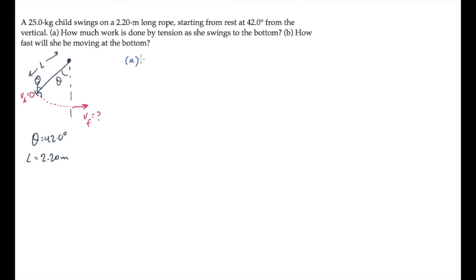Part A asks us how much work tension does as she swings towards the bottom. The work done by tension at any instant is the magnitude of the force times the displacement times cosine of the angle between those.